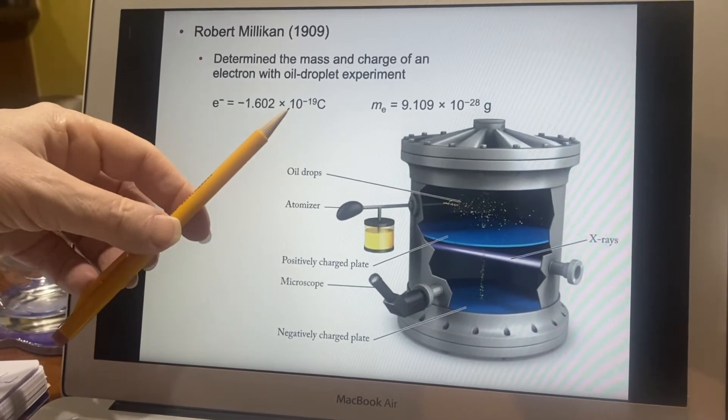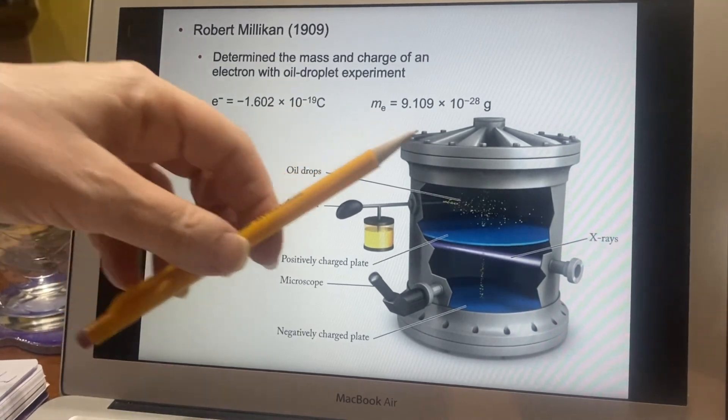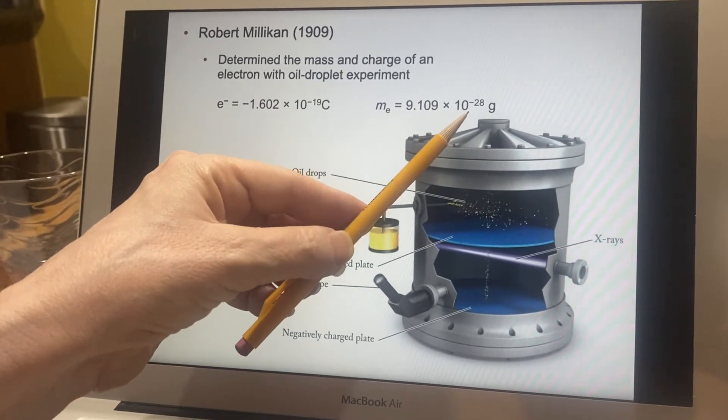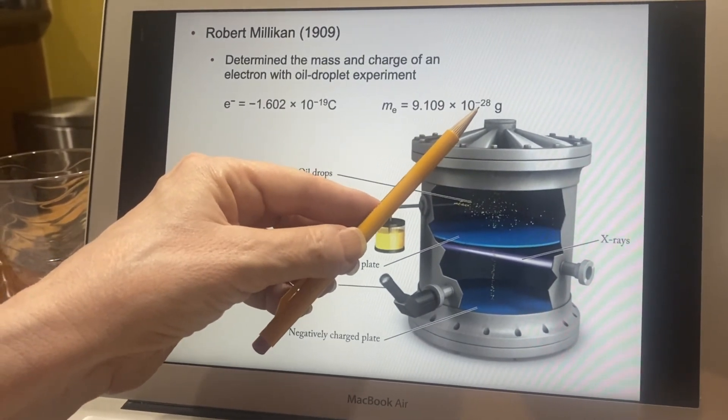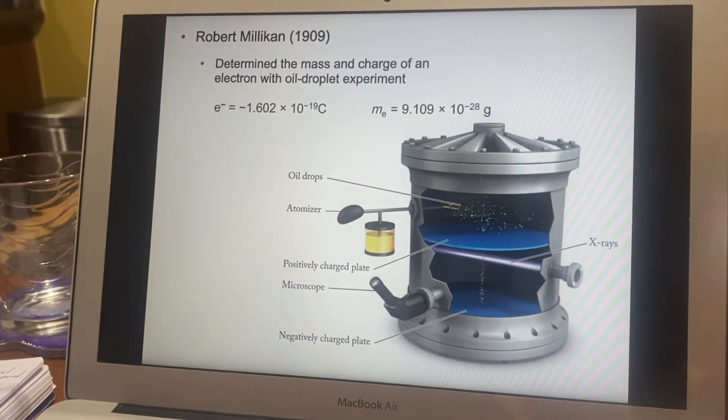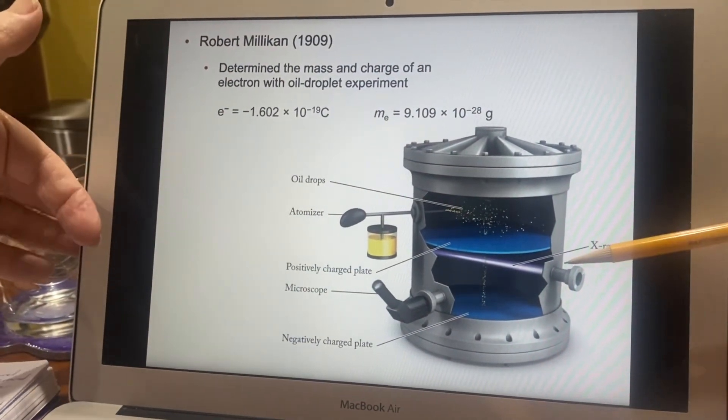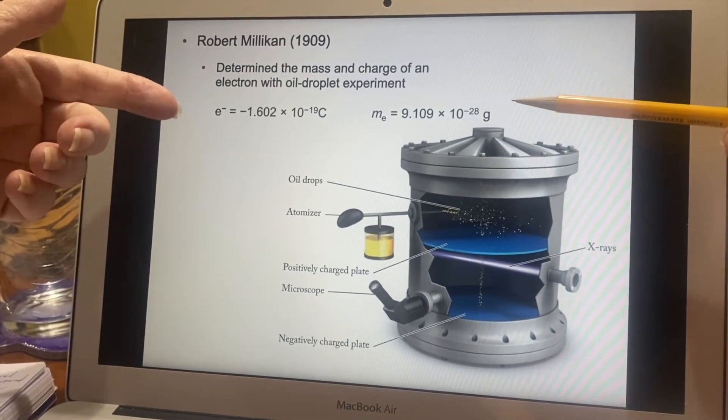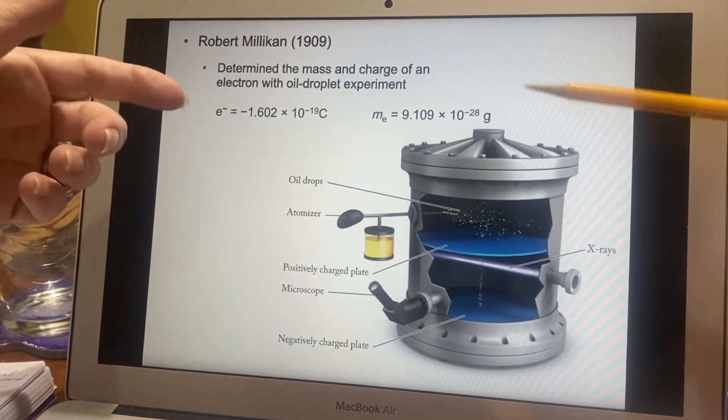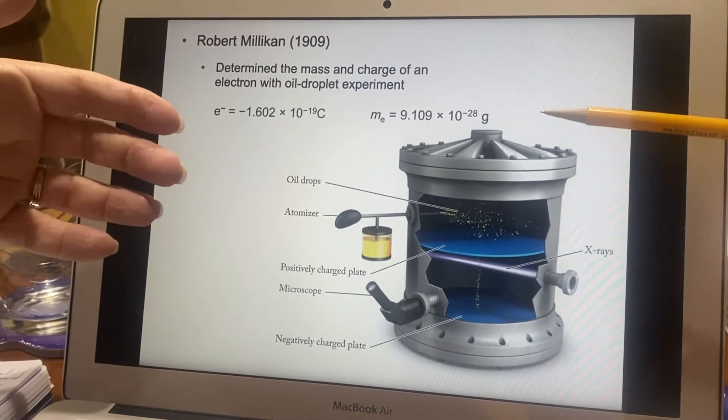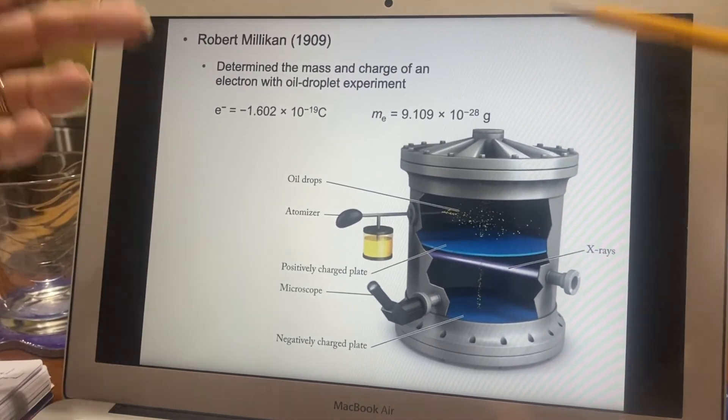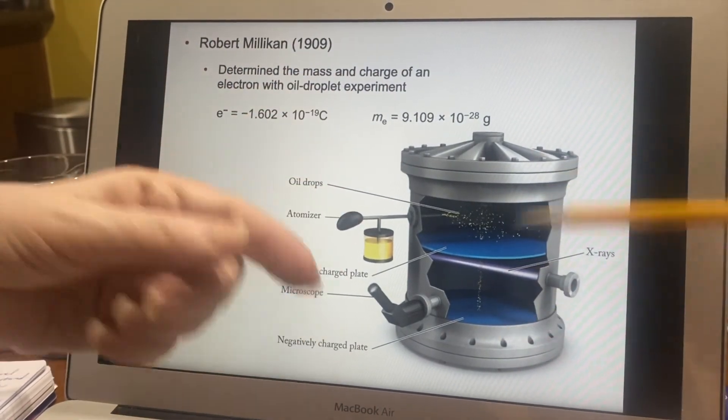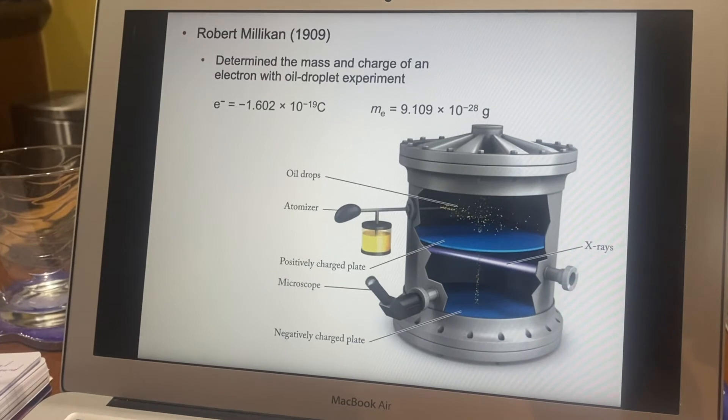So, it turns out to be 10 to the -19th. And the mass of an electron, oh my gosh, that's really, really small too. 9.109 × 10^-28 grams. And one of the other interesting things about this experiment is when he first did it, these numbers weren't right. They were in the neighborhood, but they were not right. And it took many years for the science to catch up to make this accurate enough experiment to get the numbers to be this accurate.